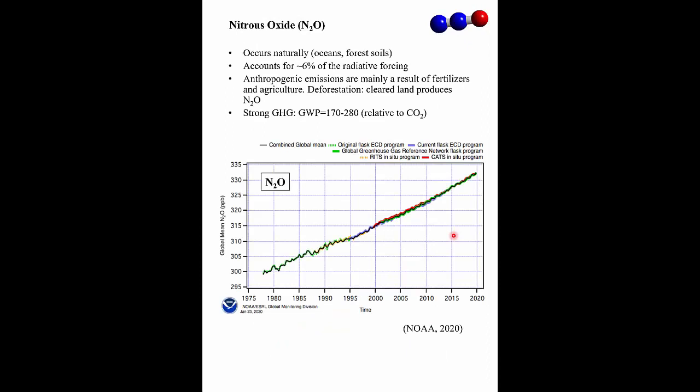Another greenhouse gas is nitrous oxide, N2O — two nitrogen atoms bonded to an oxygen atom. It occurs naturally and accounts for about 6% of radiative forcing. Human emissions come mainly from fertilizers and agriculture; clearing land also produces N2O for several years afterward. It's a strong greenhouse gas — about 170 to 180 times stronger than CO2. NOAA data shows a steady climb in N2O from 1975 to present.